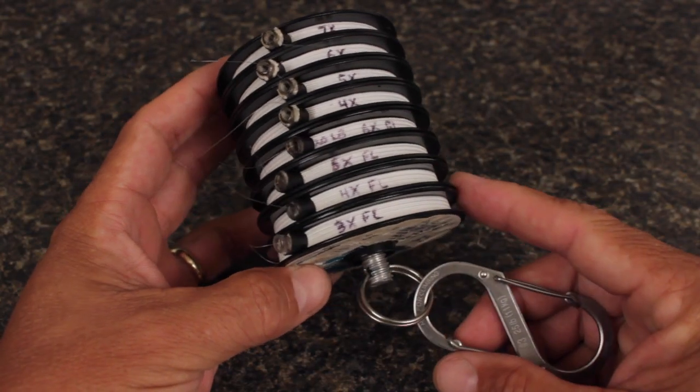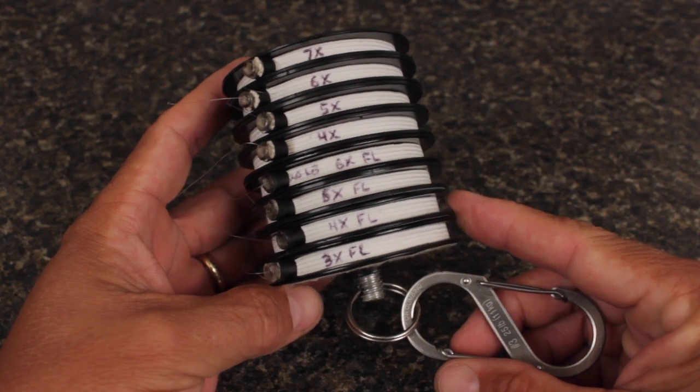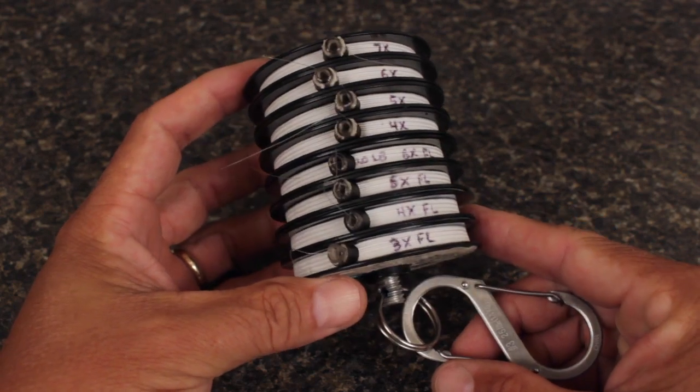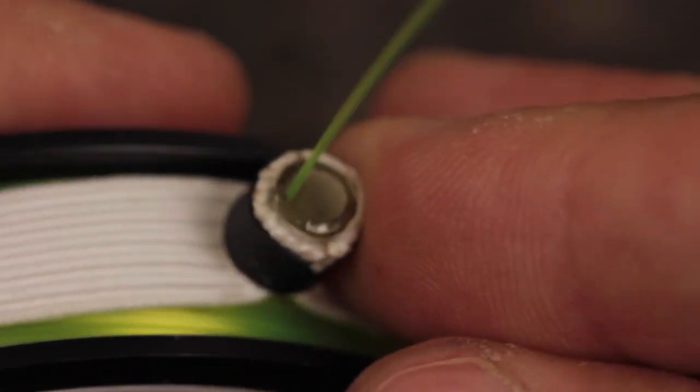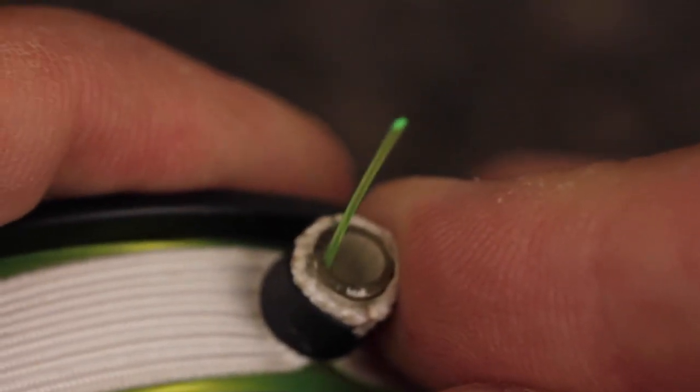I'm often asked about the spool tenders I have for tippet material. They're homemade, cheap, easy to construct, and work exceptionally well, allowing you to either pull leader from the spool or put it back on.